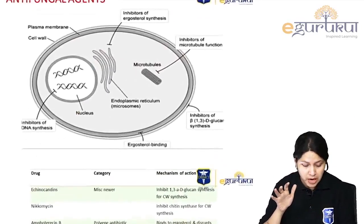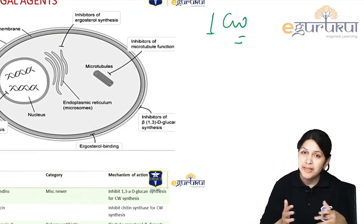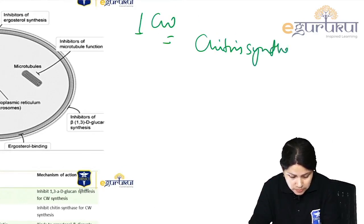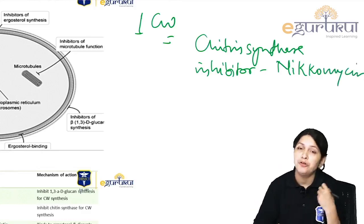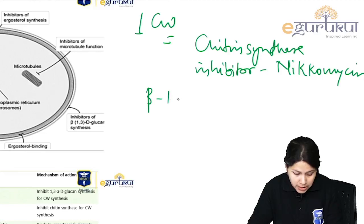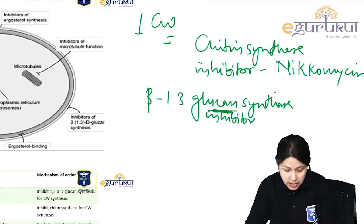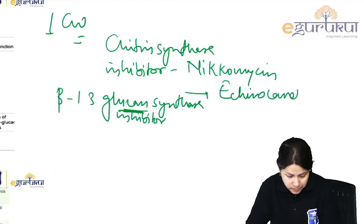Now for antifungal agents, starting with those acting on the cell wall: the cell wall contains chitin, so first is the chitin synthase inhibitor — nikkomycin. An important constituent of the cell wall is beta-1,3-glucan, inhibited by the echinocandins — the beta-1,3-D-glucan synthase inhibitors.